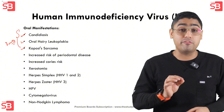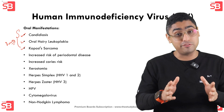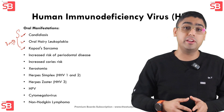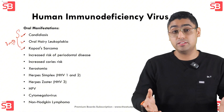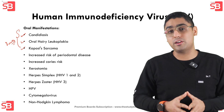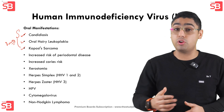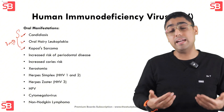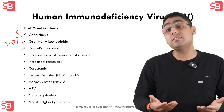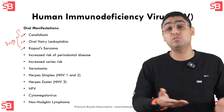Oral hairy leukoplakia shows up as white corrugated patches present on the sides of the tongue. This is very important — the examiner is going to ask you what causes oral hairy leukoplakia, and the answer is Epstein-Barr virus. Lastly, Kaposi's sarcoma appears as red or purple plaques or nodules on the mucosa. Many times the examiner shows you a picture and you have to clinically diagnose that this is a case of Kaposi's sarcoma.